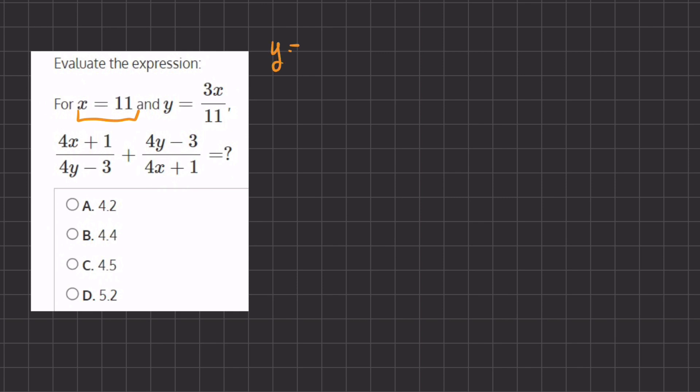So let's plug in to the expression of y 3 times the value of x, which is 11, divided by 11. Now we can simplify this by multiplying 3 and 11. So we have 33 divided by 11 and that gives us 3. Another way you could have solved is by eliminating the 11s and just simplifying to get 3.